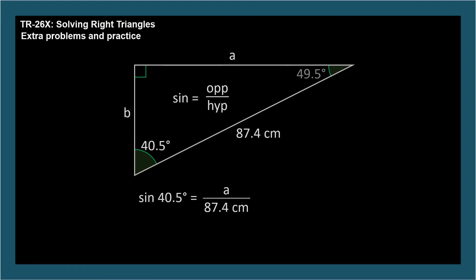Sine 40.5 degrees equals 0.6494. So a equals 87.4 centimeters times 0.6494, which is 56.8 centimeters.